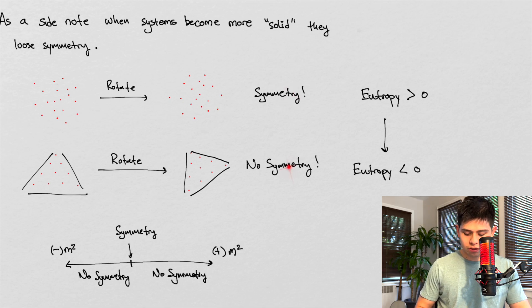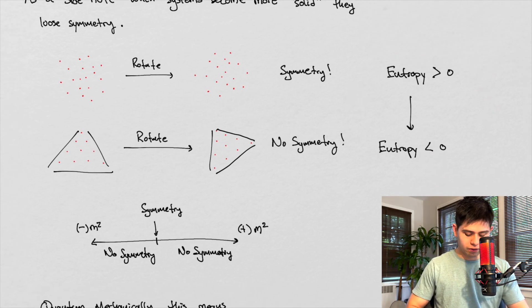So we go from symmetry to no symmetry. And in some thermodynamic sense, we're going from high entropy to low entropy. So,